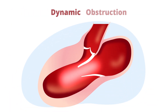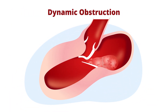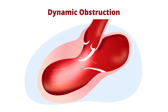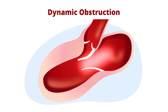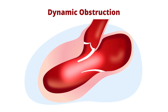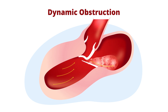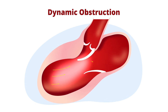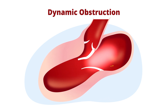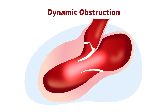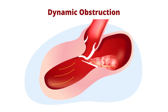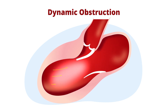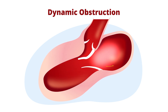Dynamic obstruction occurs later in the systolic phase of the cardiac cycle and is the result of anatomic changes in the left ventricular outflow tract. A typical example of dynamic obstruction may occur in those with hypertrophic cardiomyopathy and associated systolic anterior motion of the mitral valve.